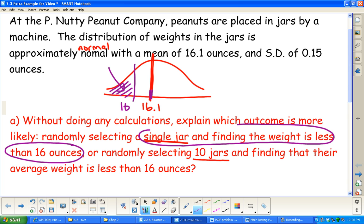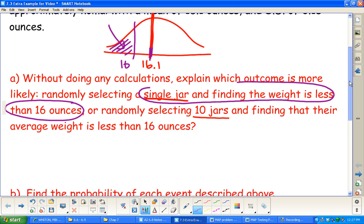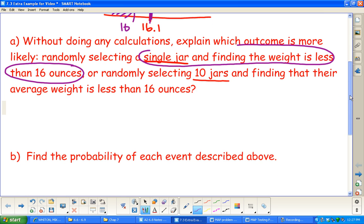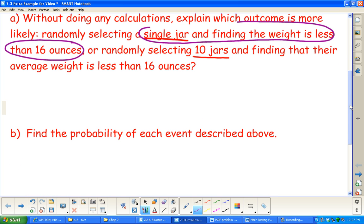Now let's actually do some work here. There is a part B: find the probability of each event. Let's do the probability that a single jar is less than 16 ounces. This one is just a straight-up normal CDF problem like we did back in chapter two, because they told us the population is normal.